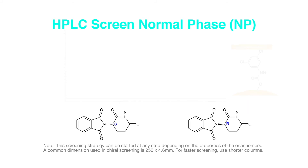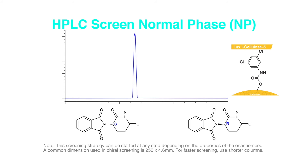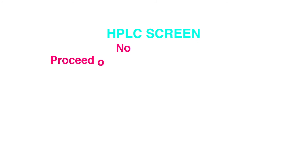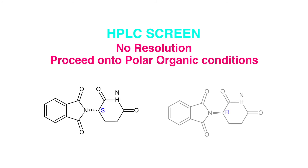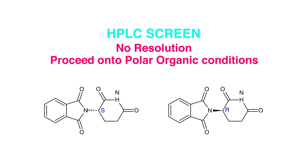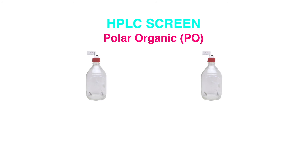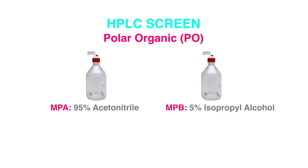The solvent flexibility of the immobilized chiral phases allows the usage of more diverse LC modes and solvent configurations to solve tough separation issues. A common polar organic screening condition is 95% acetonitrile and 5% isopropyl alcohol.